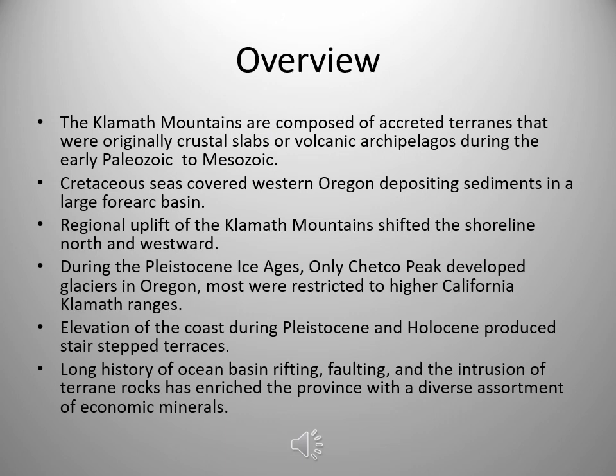The Klamath Mountains are composed of accreted terrains that were originally crustal slabs or volcanic archipelagos during the early Paleozoic to Mesozoic. Cretaceous seas covered western Oregon, depositing sediments in a large fore-arc basin. Regional uplift of the Klamath Mountains shifted the shoreline north and westward. During the Pleistocene ice ages, only Chetco Peak developed glaciers in Oregon; most were restricted to higher California Klamath ranges. Elevation of the coast during the Pleistocene and Holocene produced stair-step terraces. A long history of ocean basin rifting, faulting, and intrusion of terrain rocks has enriched the province with a diverse assortment of economic minerals.